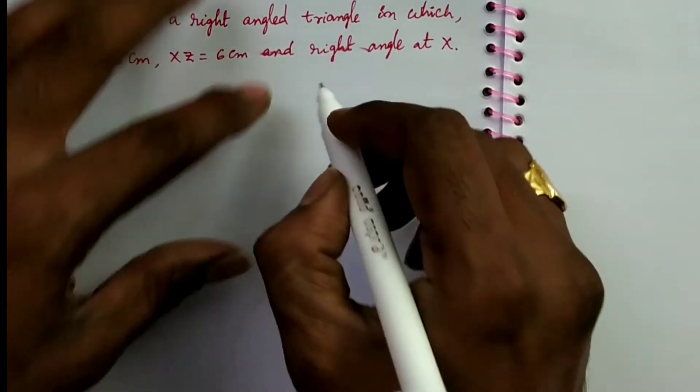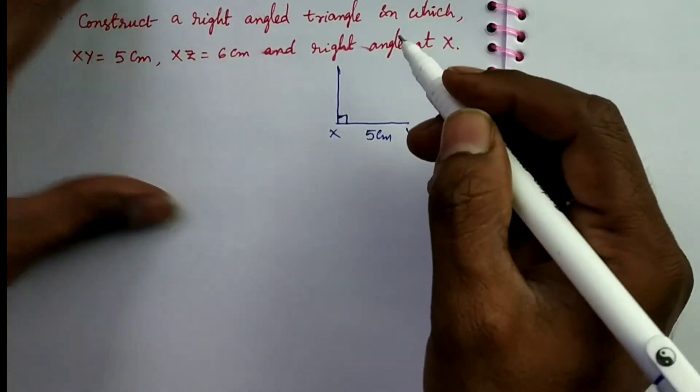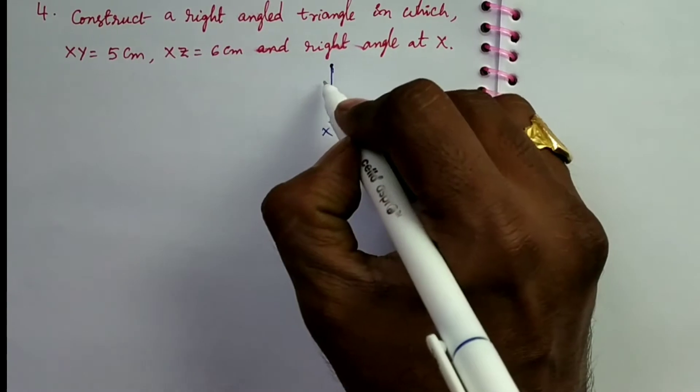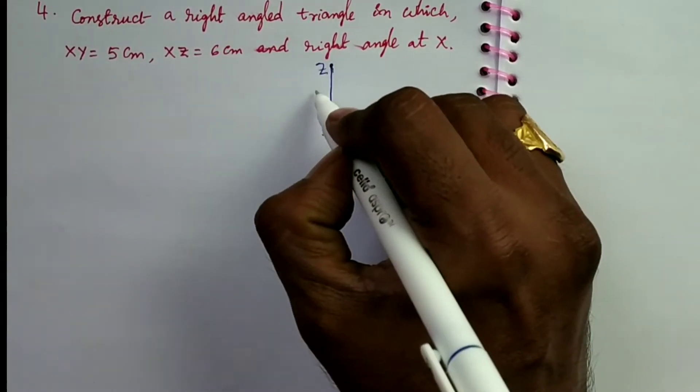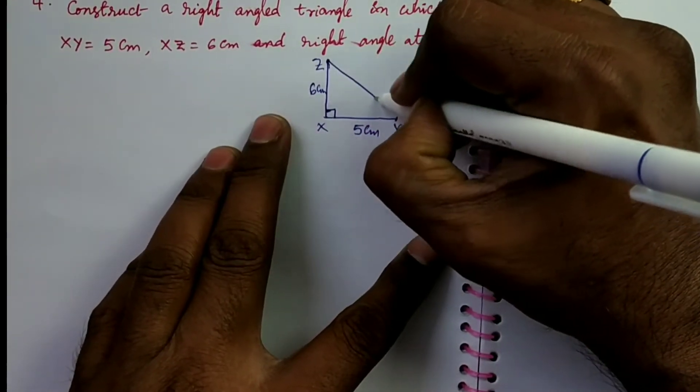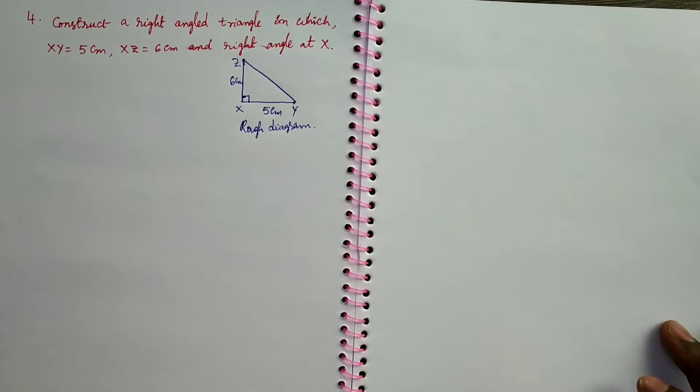Right angle at X means 90 degrees. And XZ, this is the Y, so Z should be here. XZ will be 6 cm. This is the rough diagram of the given triangle. Let us go to construct the original diagram.